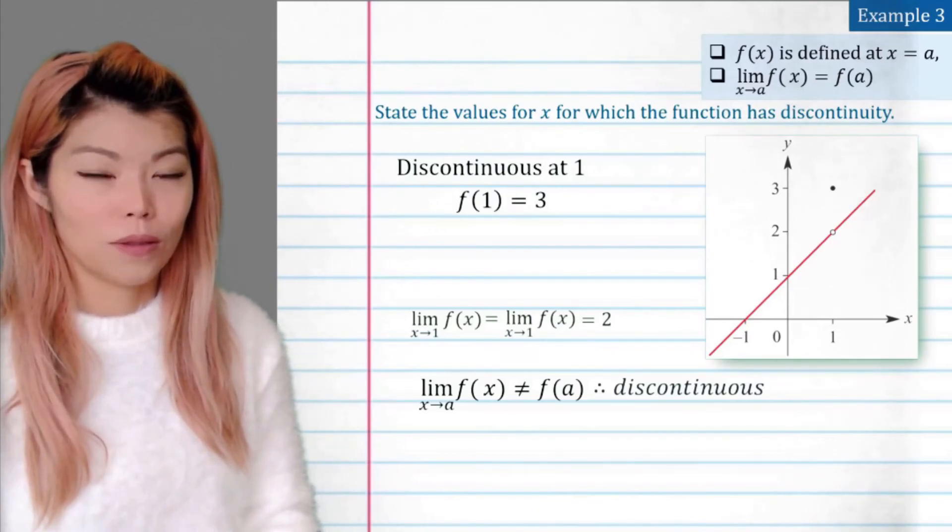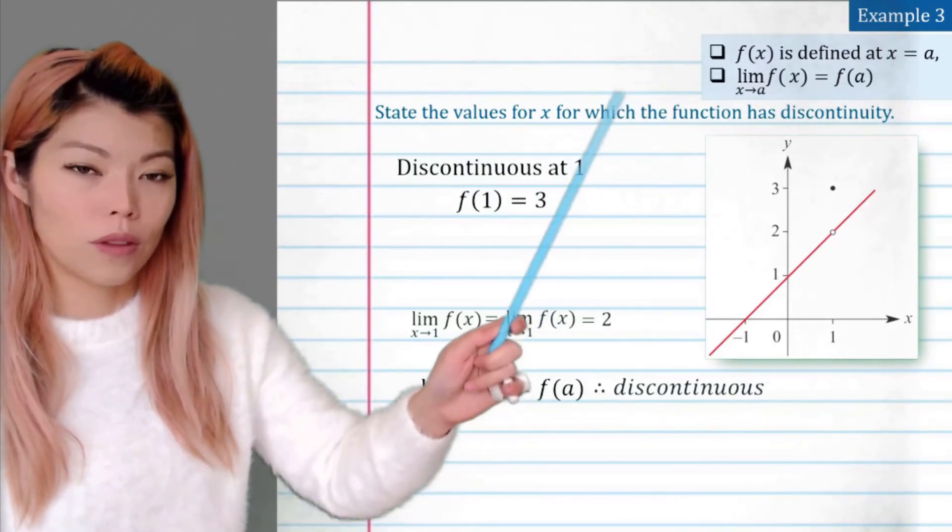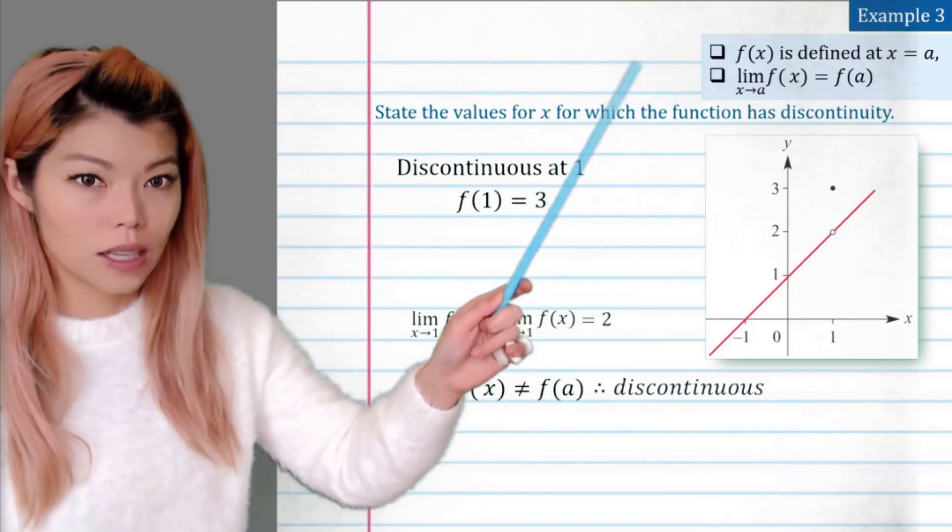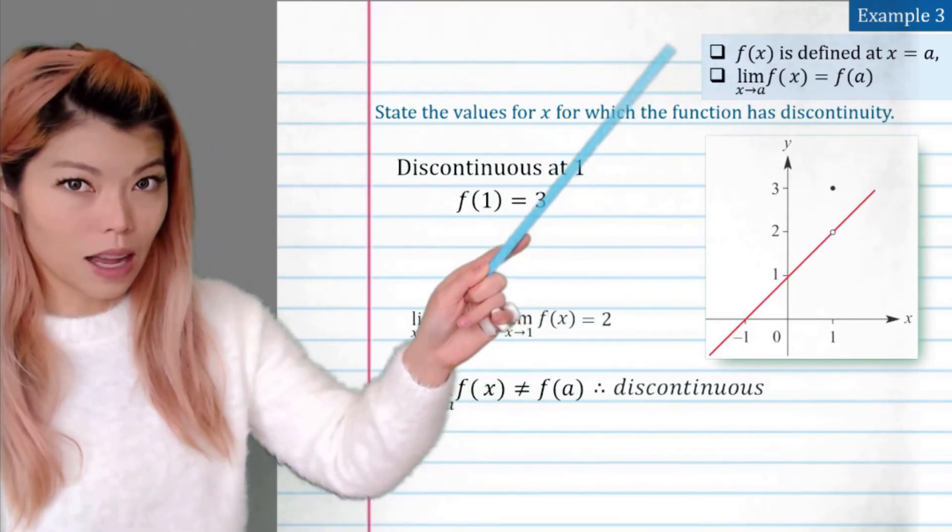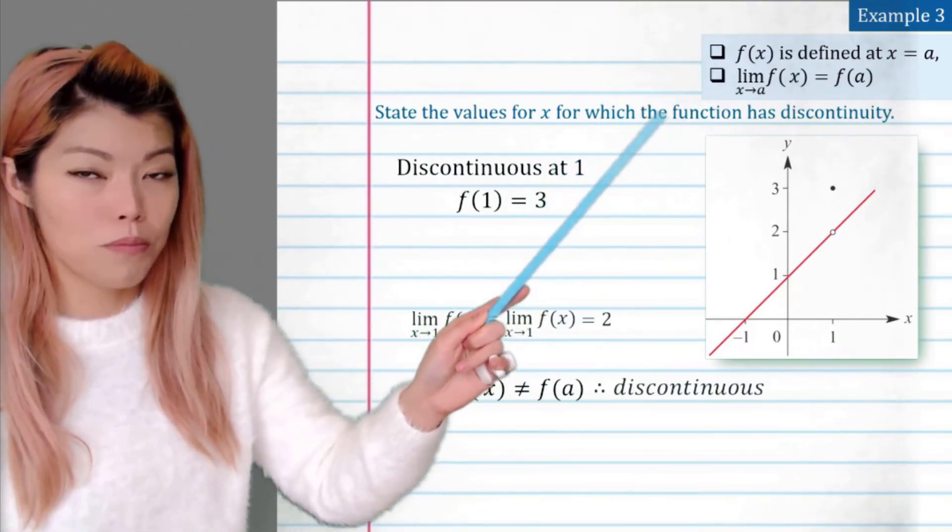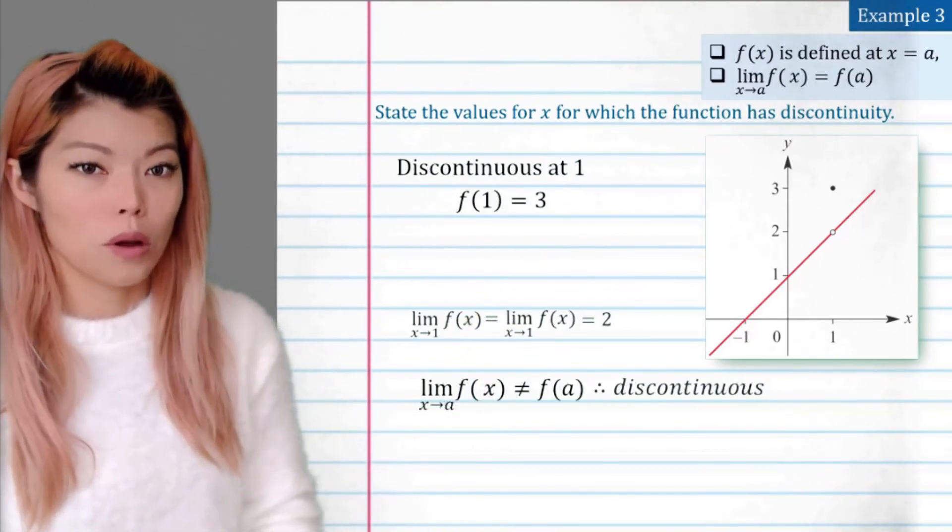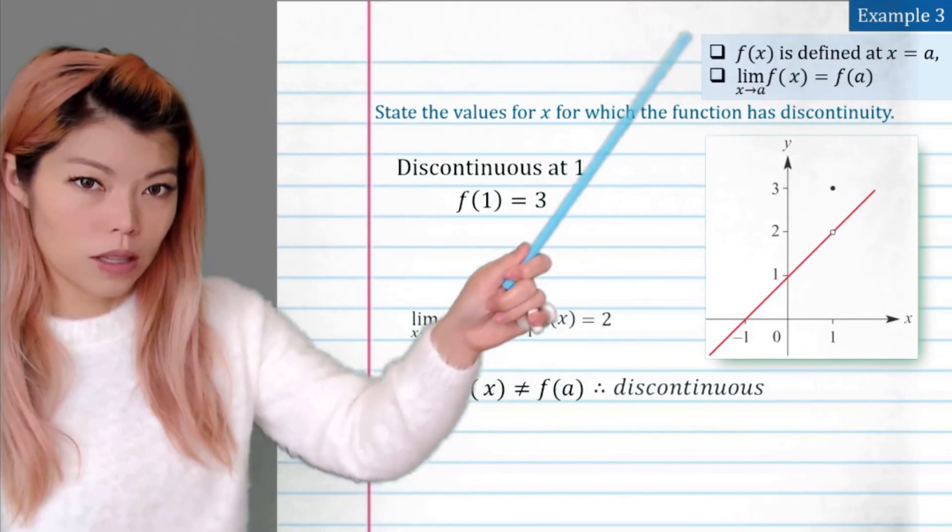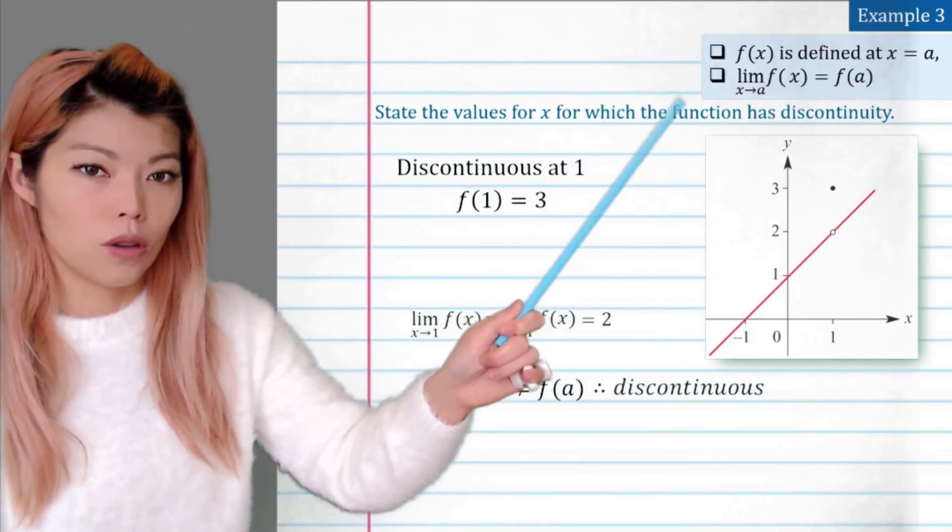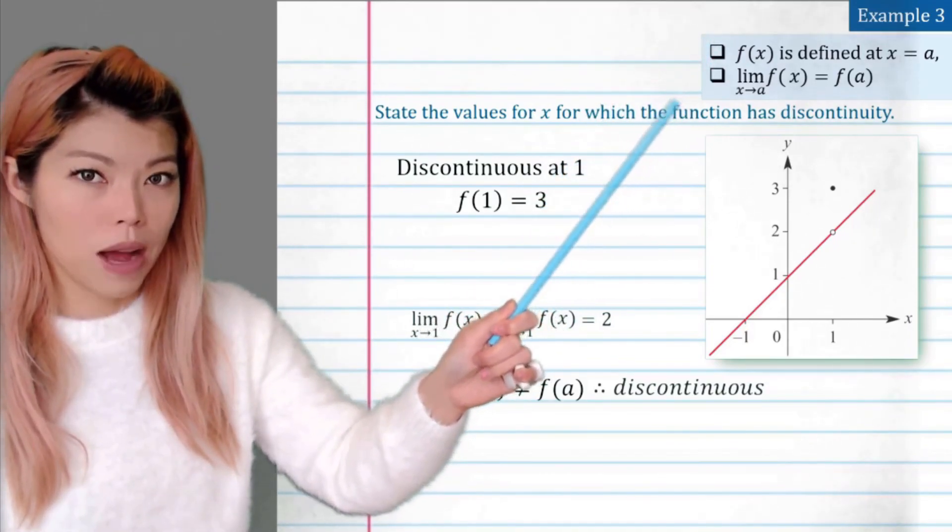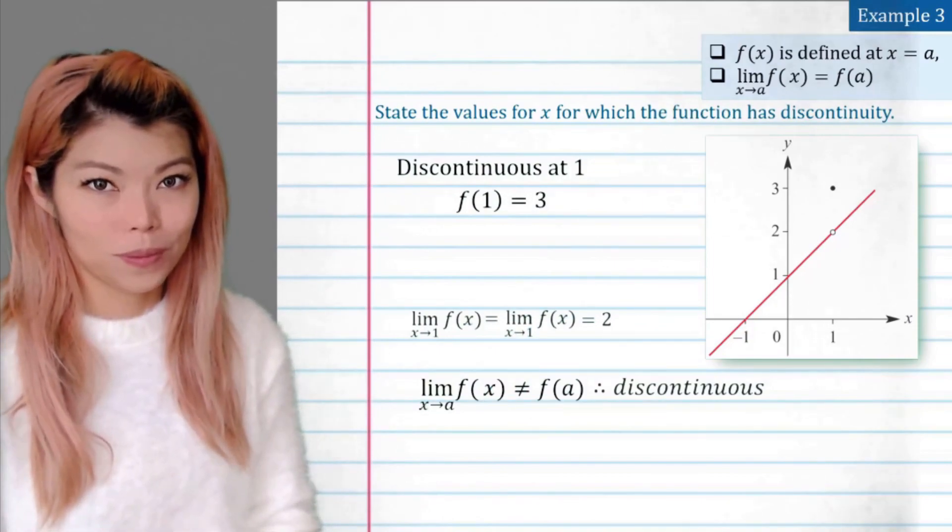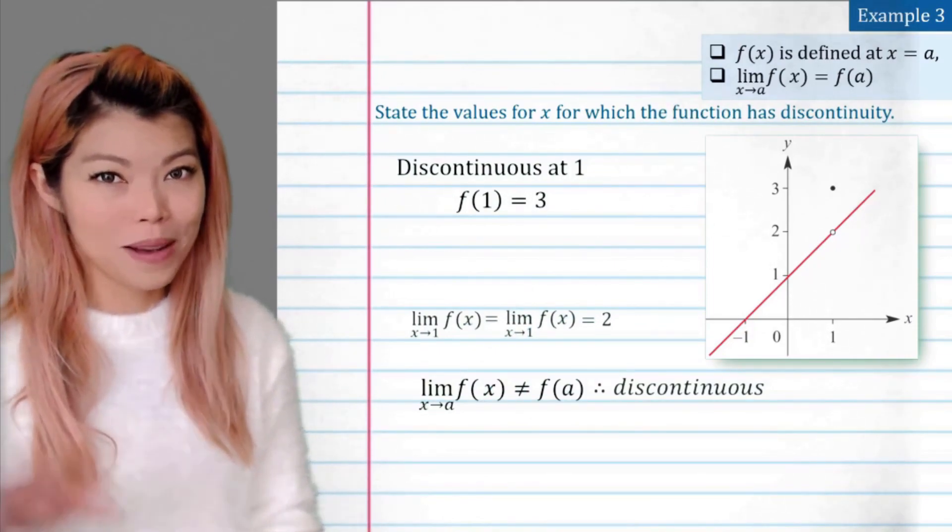Okay, thank you for watching. And remember, we can prove that something's continuous if it exists at that point, and that value matches with the limit approaching that point. So a value exists at that point, so the first point, and the y value at that point matches that of the limit. Okay, thank you for watching, revise, and I'll see you next time. Bye.